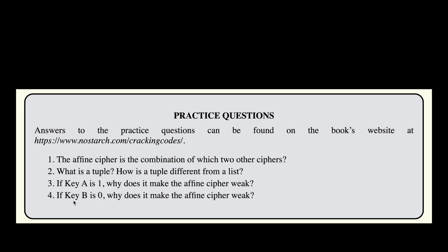And finally, if key B is 0, why does it make the Affine Cipher weak? We add key B after multiplying the original index by key A. If key B is 0, we are not shifting the index at all — any number plus 0 is still the same number — so the Affine Cipher would encrypt a letter to that same letter, which is not secure.